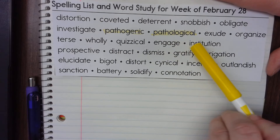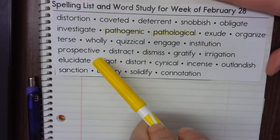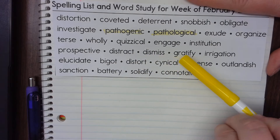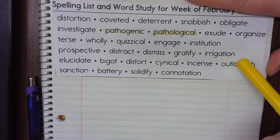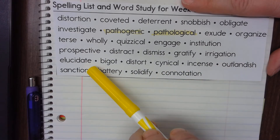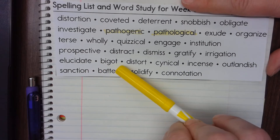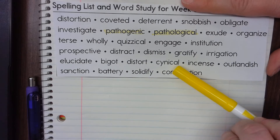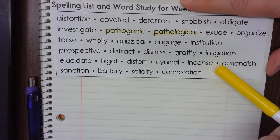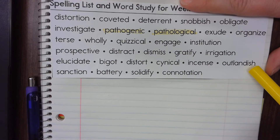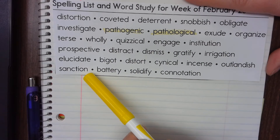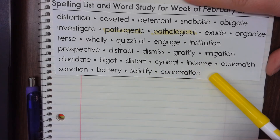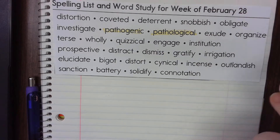Engage, institution, prospective, distract, dismiss, gratify, irrigation, elucidate, bigot, distort, cynical, incense — like church incense — outlandish, sanction, battery, solidify, connotation, solidify.